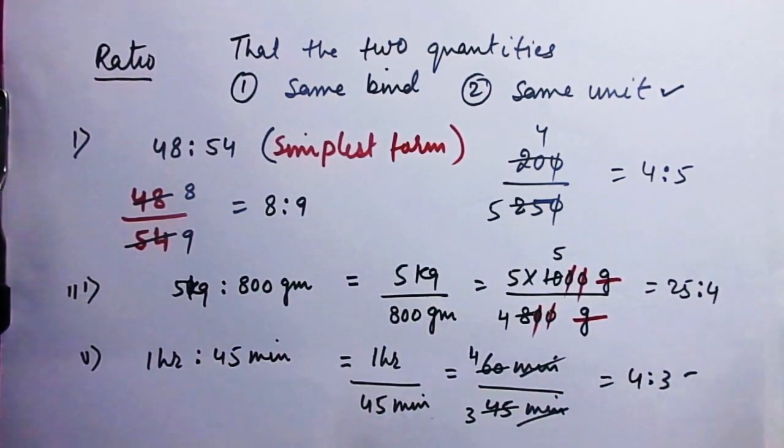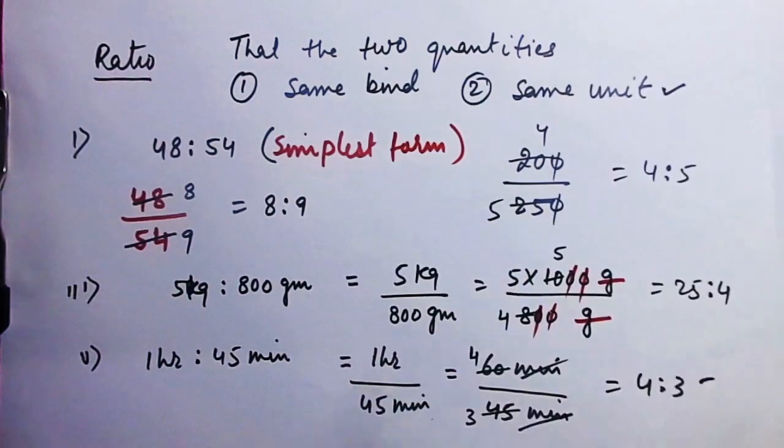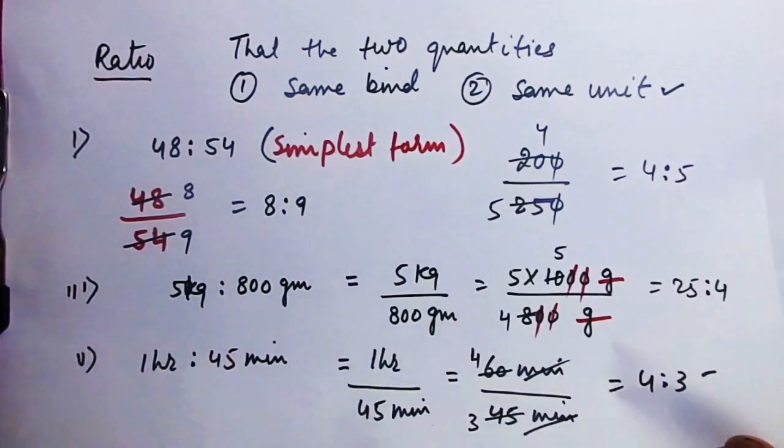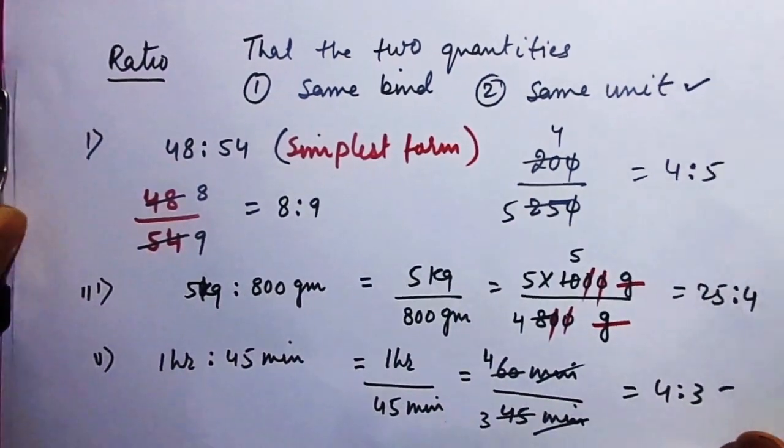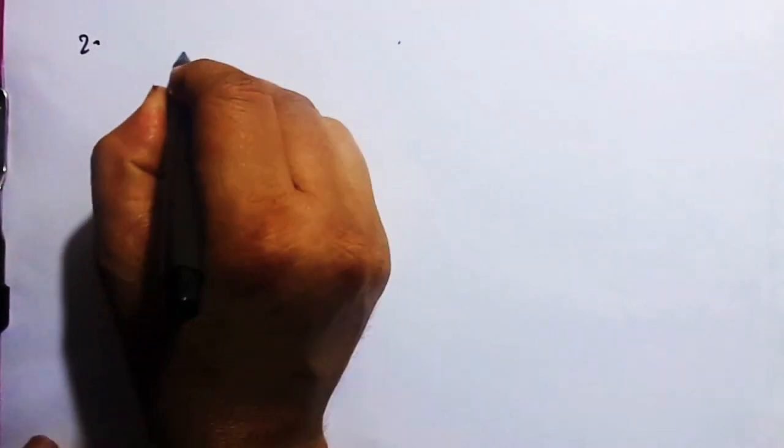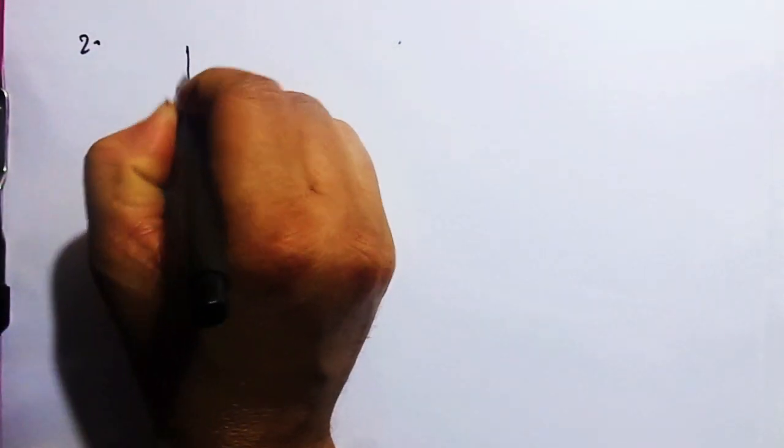Similarly for 2 years and 9 months: remember one year equals 12 months, so 2 years equals 24 months. Then find the ratio of 24 months to 9 months and simplify.